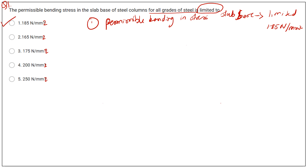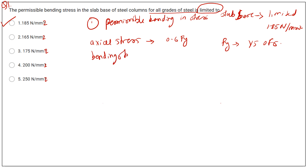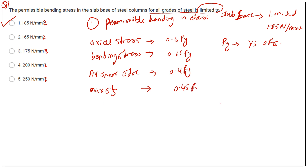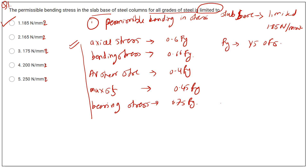There are some remaining terms related to permissible stresses. First is axial stress: permissible value is 0.6 Fy, where Fy is the yield strength of steel. Bending stress: 0.66 Fy. Average shear stress: 0.4 Fy. Maximum shear stress: 0.45 Fy. Bearing stress: 0.75 Fy. And for the slab base specifically, the value is 185 Newton per mm².